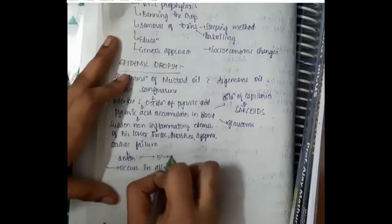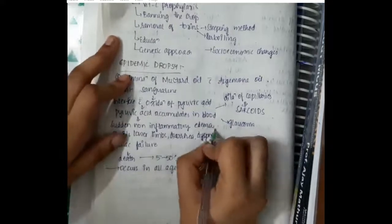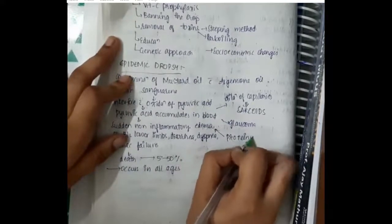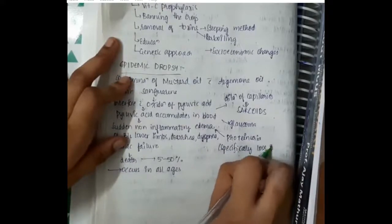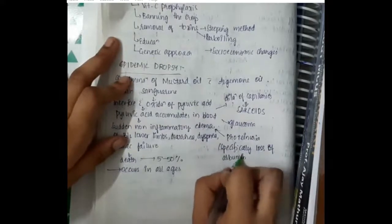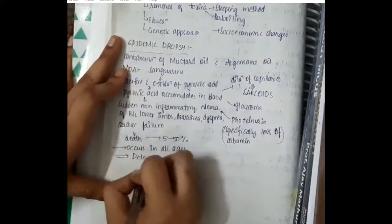This sanguinarine dropsy occurs in all ages. There is proteinuria. Specifically, loss of albumin can also lead to edema. This non-inflammatory edema is due to proteinuria. This epidemic dropsy occurs in all stages.